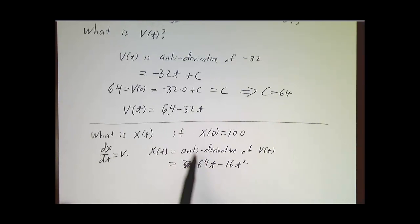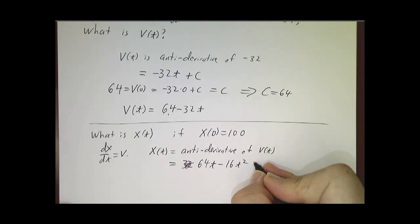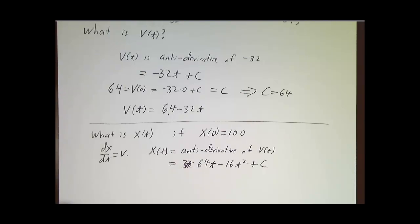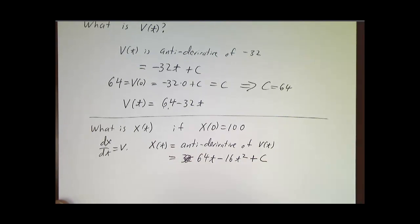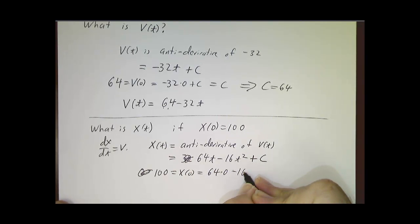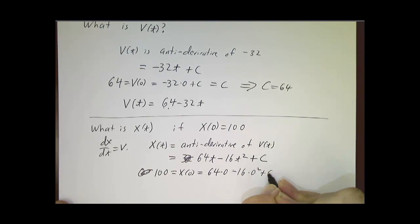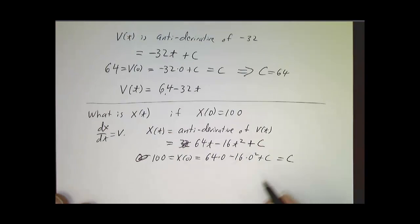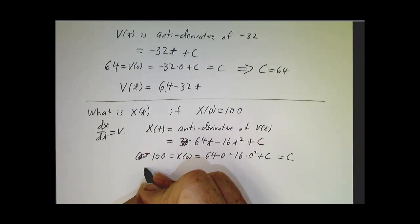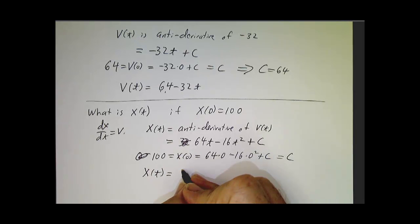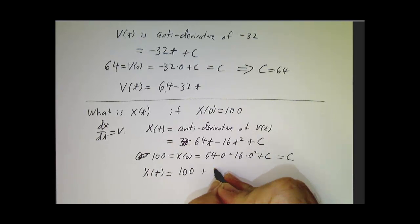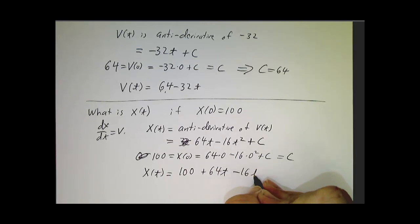The derivative of 64t is 64, the derivative of negative 16t squared is negative 32t, and we have to figure out the constant. How do you figure out the constant? Plug in the initial value. 100 is the value at time 0, that's 64 times 0 minus 16 times 0 squared plus c, so that's c. So c is 100, and now we've got our answer. Our position at time t is 100 plus 64t minus 16t squared.